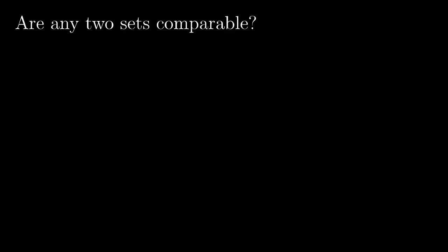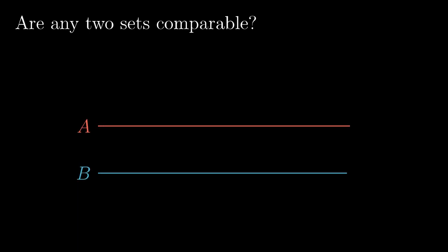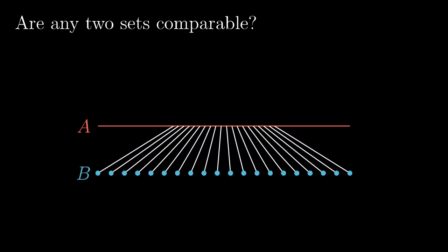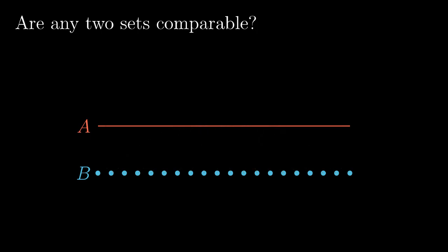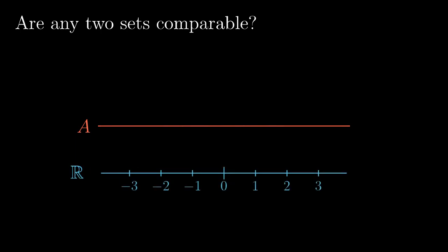In the third chapter we already mentioned the question of whether the cardinalities of every pair of sets are comparable. That is, whenever we take two sets A and B, whether there must be a matching fully covering at least one of the sets. With some pairs of sets this is really unclear — say the real line and omega-2. Omega-2 is an unimaginably long ordinal number.